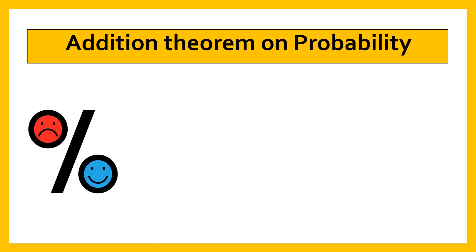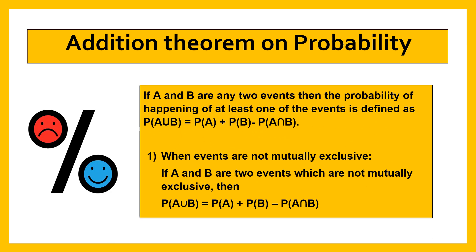Addition theorem on probability. If A and B are two events then the probability of happening of at least one of the events is defined as.